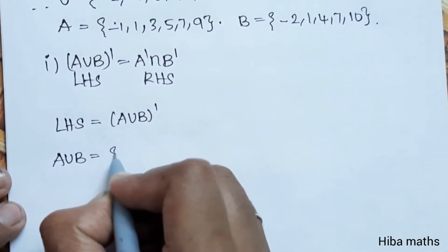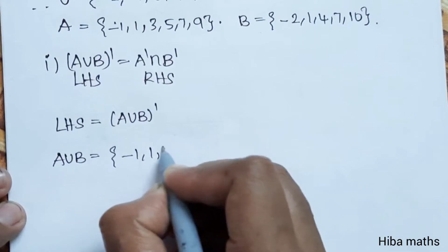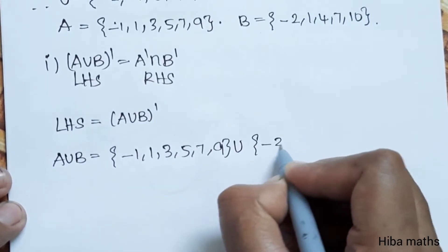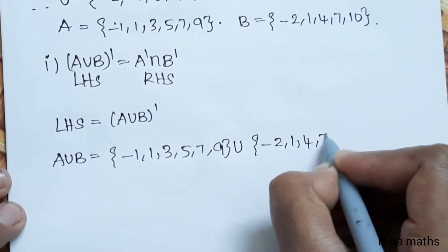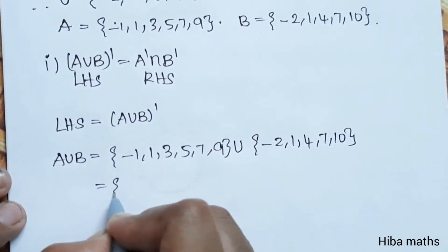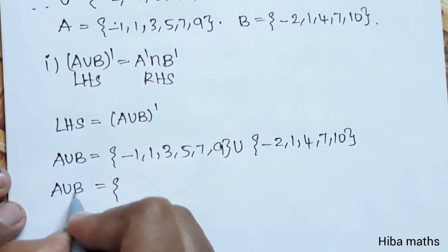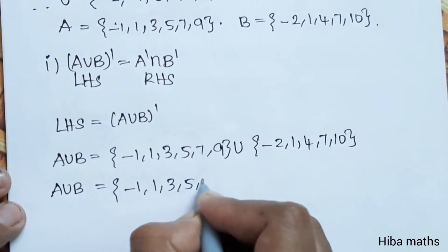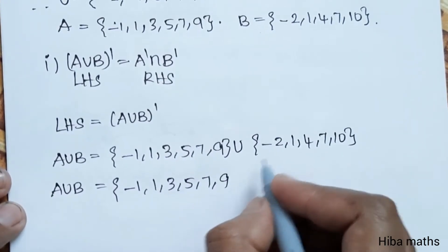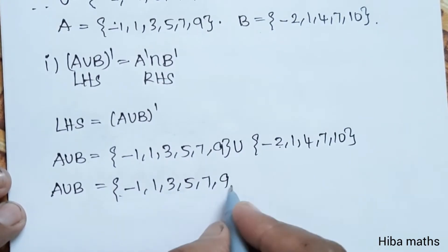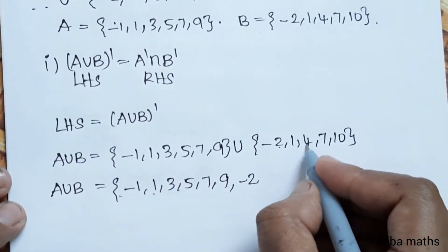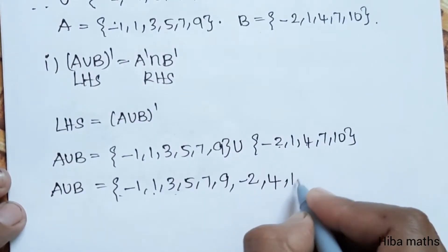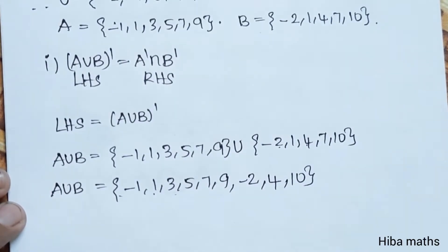LHS: A union B. A set is {-1, 1, 3, 5, 7, 9} and B set is {-2, 1, 4, 7, 10}. Taking the union, A union B = {-2, -1, 1, 3, 4, 5, 7, 9, 10} — combining all elements from both sets.